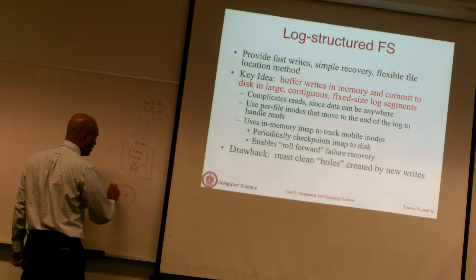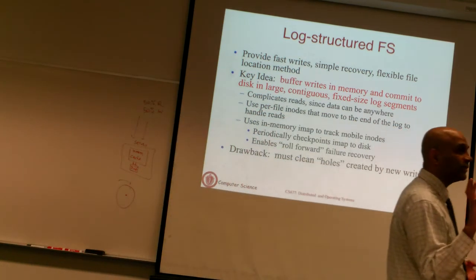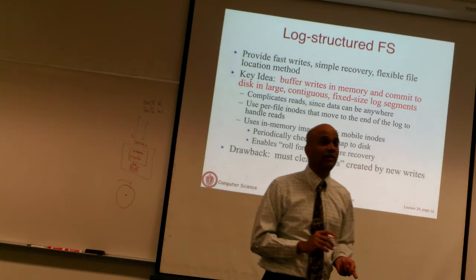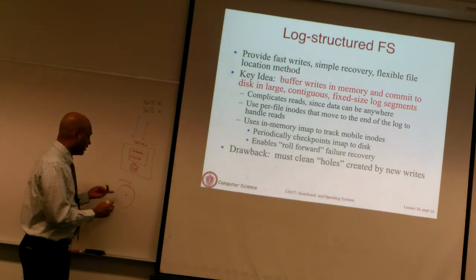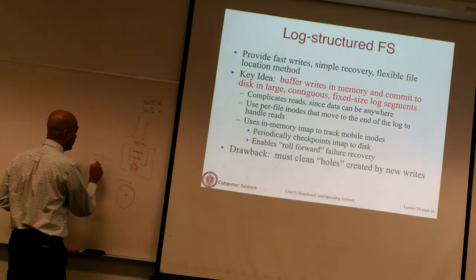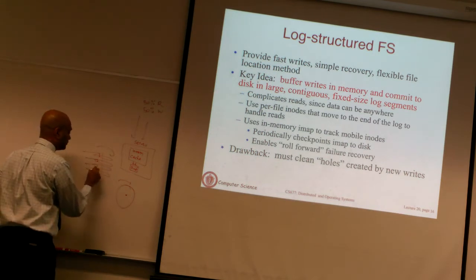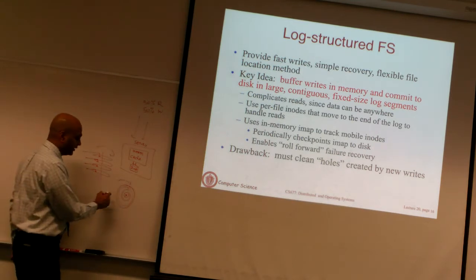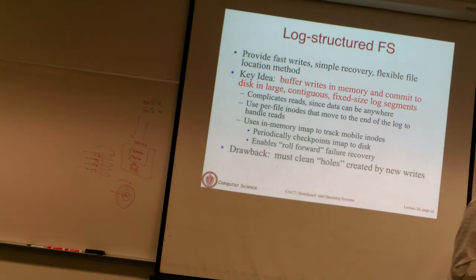Disks are typically magnetic disks that look like a CD or DVD — there is a recording surface with data recorded in concentric circles. When spinning, a disk head can move back and forth to read data. Magnetic disk drives have a platter of these CD-like recording surfaces stacked together with a motor spinning them, and each has a disk head. Data is recorded in concentric circles called tracks. You move the disk head to the right track and wait for the rotating disk to bring the data under the head to read or write.